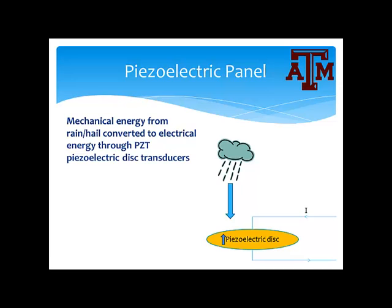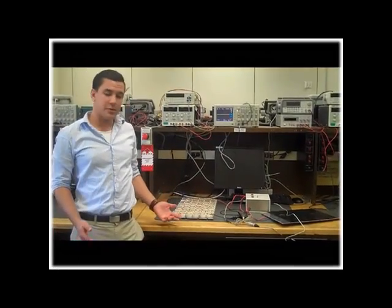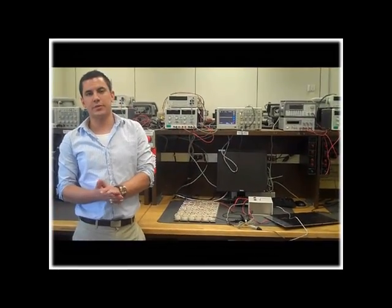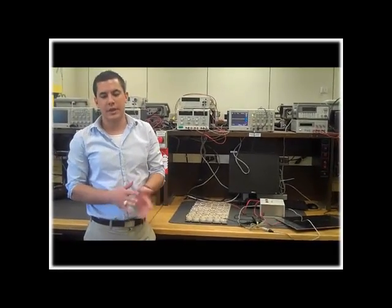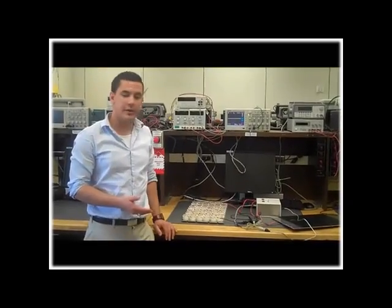For the piezoelectric panel, mechanical energy from rain or hail is converted to electrical energy through PZT piezoelectric disc transducers. As you can see here, as the rain falls down, a force is applied to the piezoelectric disc, which is polarized in the direction shown. This causes the current to be in the direction shown in the diagram. The purpose of the piezoelectric panel is to explore the fundamentals of piezoelectricity and utilize the piezoelectric properties to capture measurable energy from rain or hail.